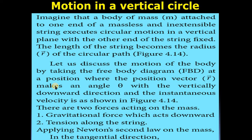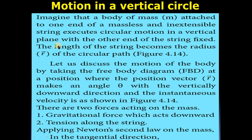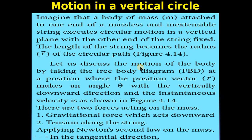The next topic is motion in a vertical circle. Imagine that a body of mass M is attached to one end of a massless and inextensible string and executes circular motion in a vertical plane, with the other end of the string fixed. The length of the string becomes the radius R of the circular path.